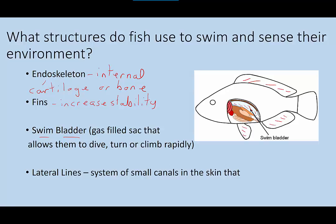Another thing fish have are really cool sense organs called the lateral line. Their lateral line is a small series of canals that typically runs across the fish, and they are lined with sensitive cells that detect vibrations in the water. This allows them to determine when a predator is coming, determine when prey is around, and keeps them oriented correctly.